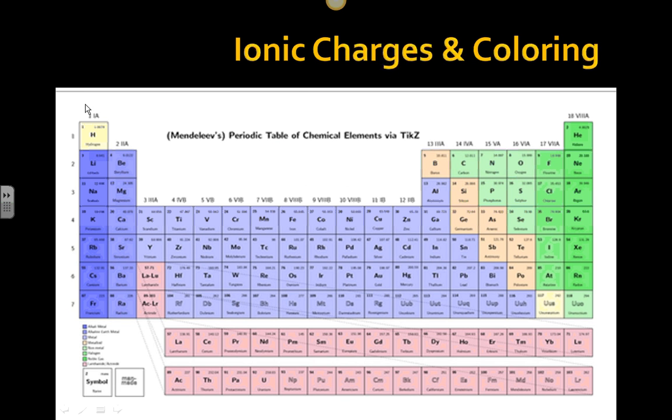So just to recap here, positive one charge, positive two charge for that group, this group here will form a positive three charge. Now, the nitrogen group here will gain three electrons, so they're going to have a charge of negative three. This group will gain two electrons, so they're going to be negative two and negative one.